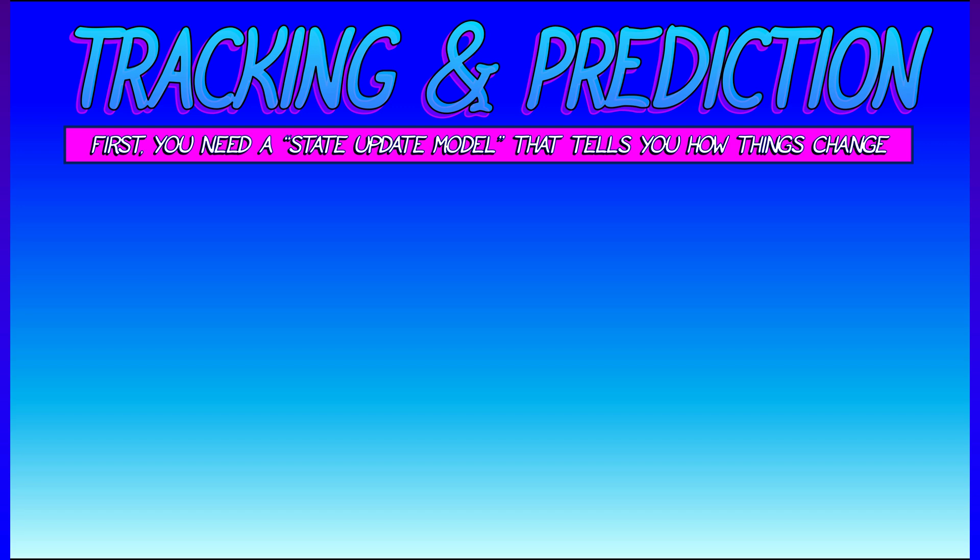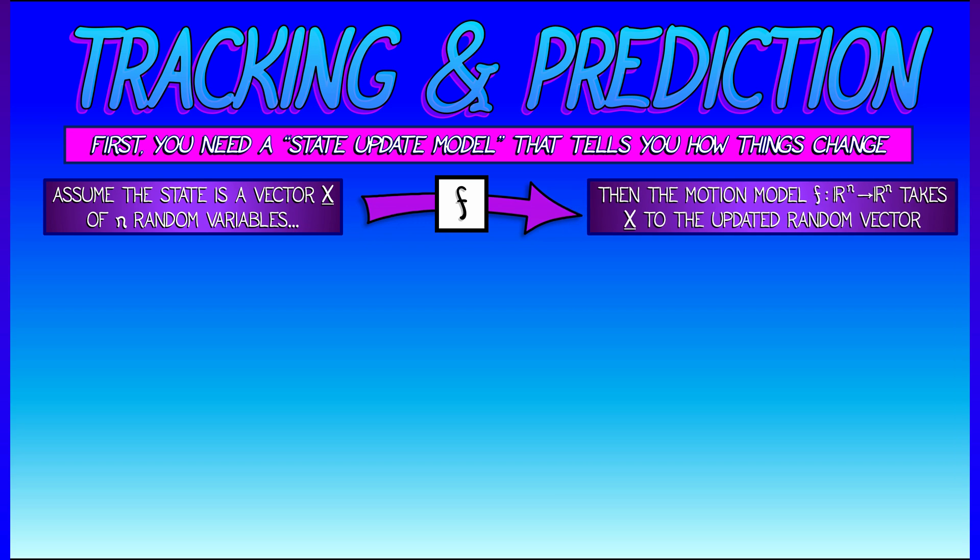So let's say that right now I take all of my state variables and I pack them into a vector x of random variables. That's my expectation and my covariance right now, my mean and uncertainty. Now, when I look at it again in a minute, I'm going to have an updated state.